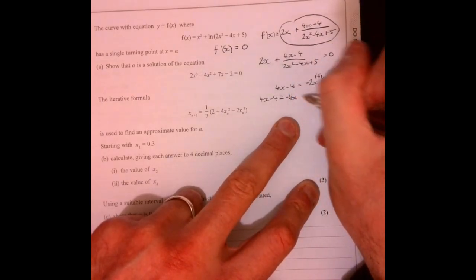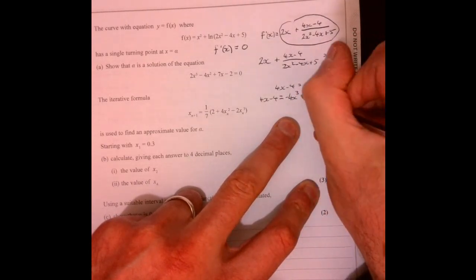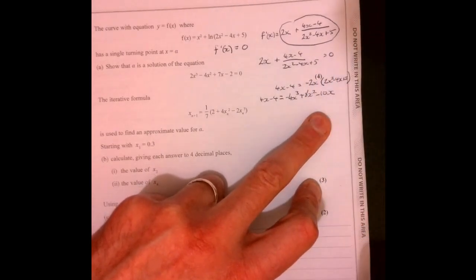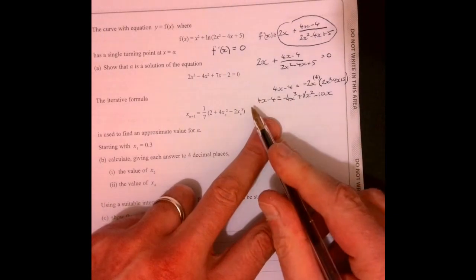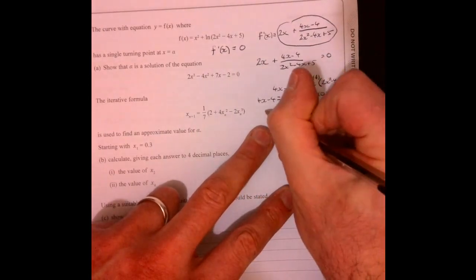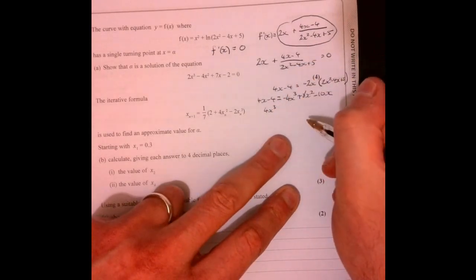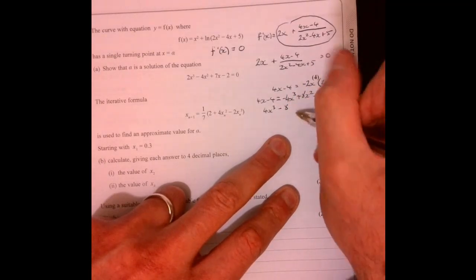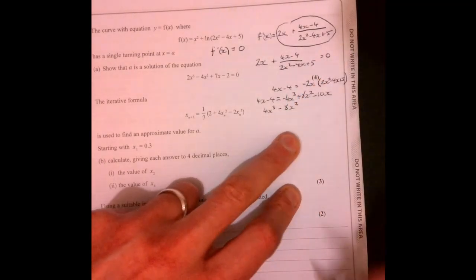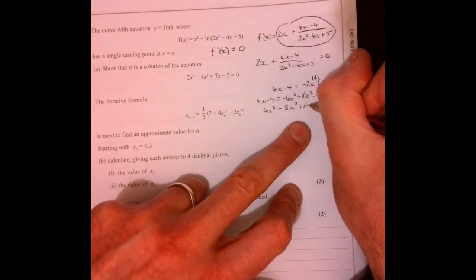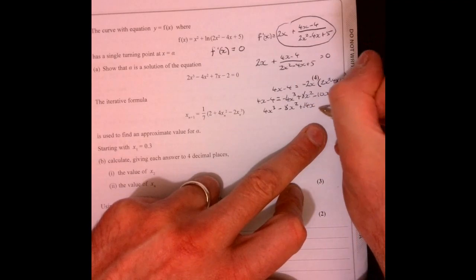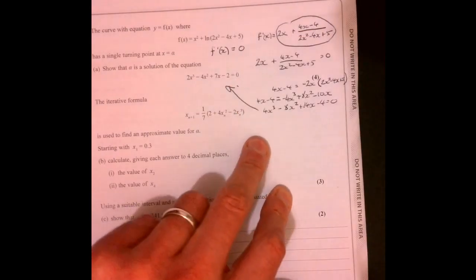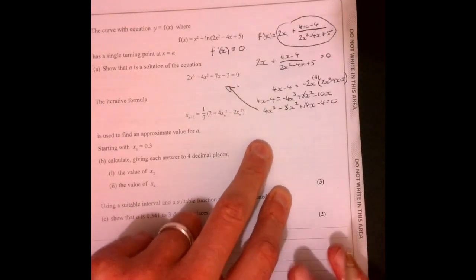Minus 4x cubed plus 8x squared minus 10x. So let's bring it all back over here, and we end up with 4x cubed minus 8x squared plus 14x and minus 4 equals 0. So half all of that. Let's divide everything by 2, and we end up with that there. So that's the first part done.